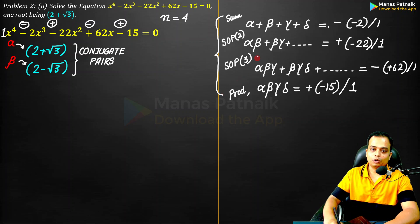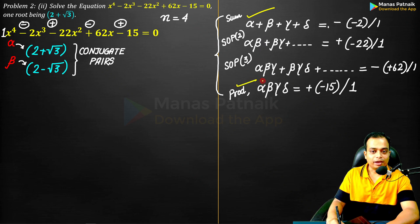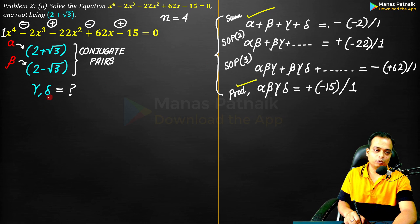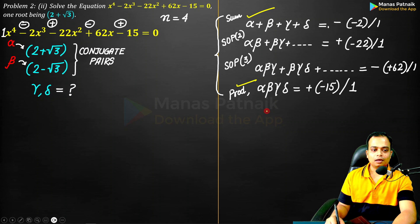I am going to apply here the sum rule and the product. Why? The reason being very simple. There are only two unknowns which I have to work out: gamma and delta. So two equations, two simple equations will make it very easy for me. Let's begin now.